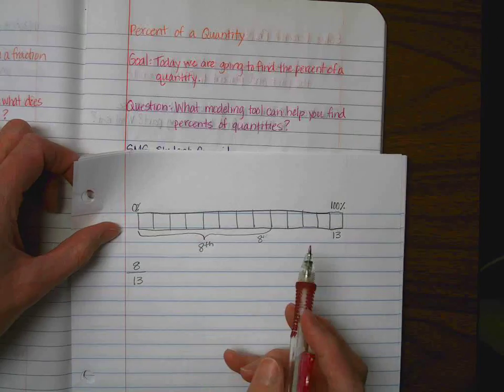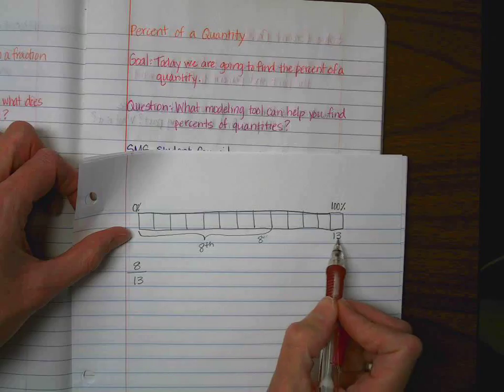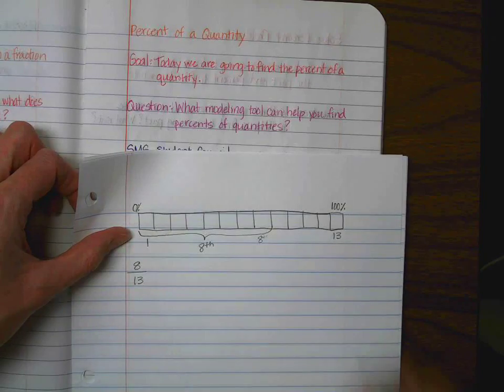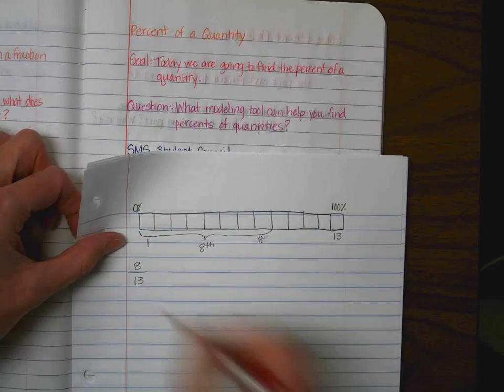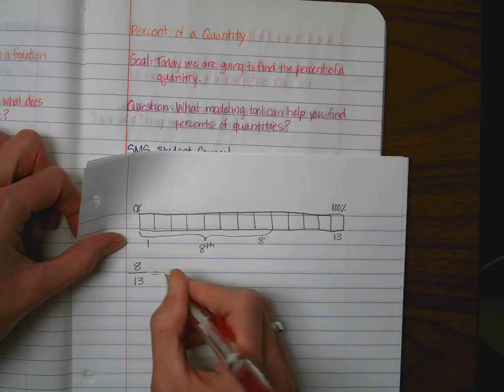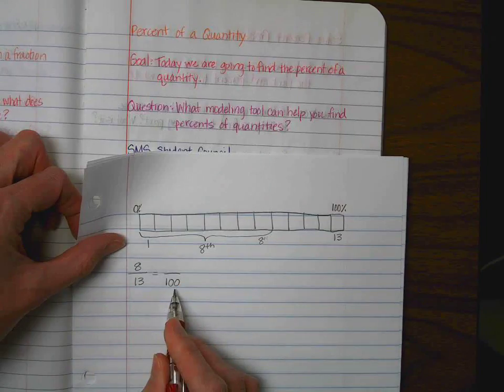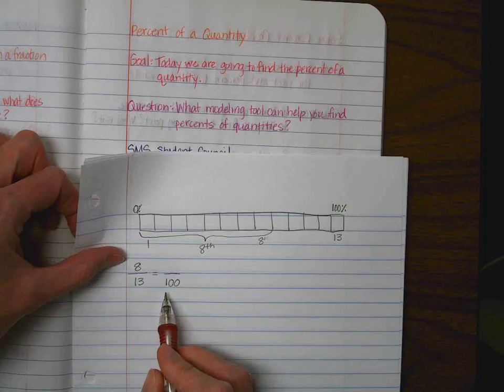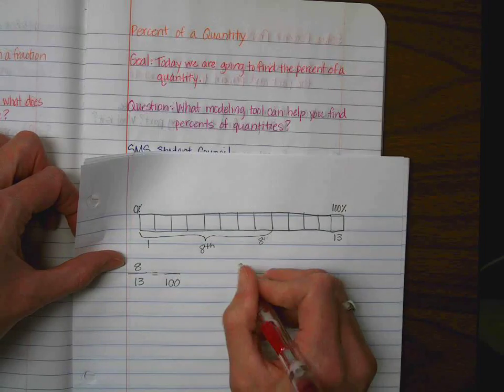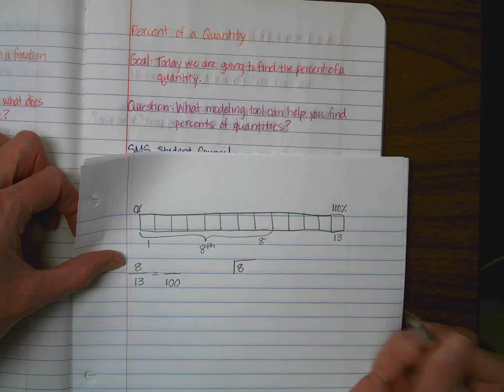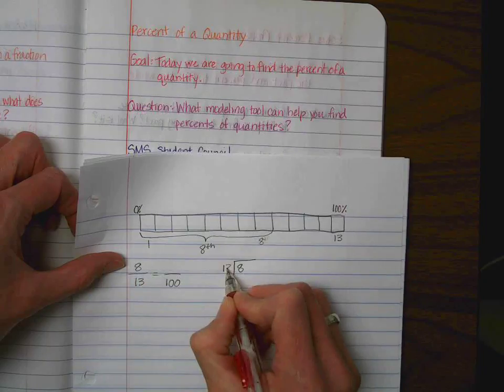Okay. So, we can either figure out the unit rate, which would be really easy because all you have to do is you have to figure out how you get from 13 to 1. And how do we do that? We divide by 13. So, what you do to one side, you have to do the other. Or, you could try to turn this into a denominator of 100, which 13 does not go into 100 evenly. So, we could work on it that way. Or, the other thing that you can do to help you find out the percentage is you would make this a division problem. So, we have 8 divided by 13.